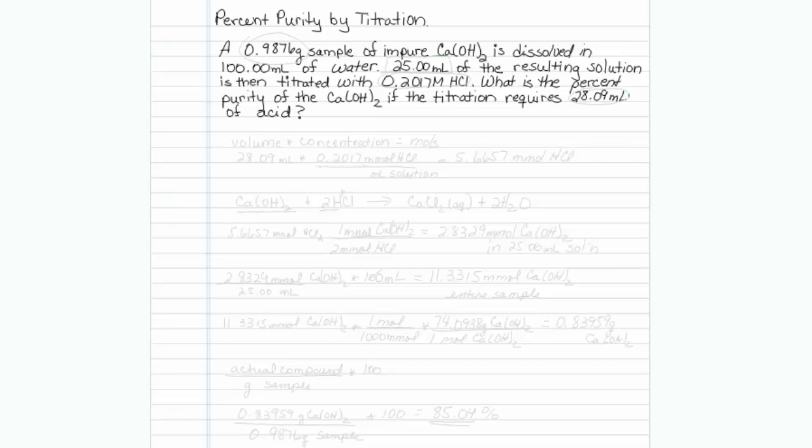This is how to get percent purity by titration. A 0.9876 gram sample of impure calcium hydroxide is dissolved in 100 mils of water. Twenty-five mils of the resulting solution is then titrated with 0.2017 molar HCl. What is the percent purity of the calcium hydroxide if the titration requires 28.09 mils of acid?